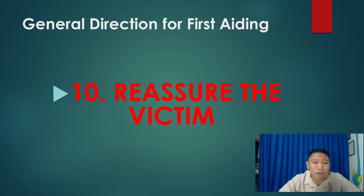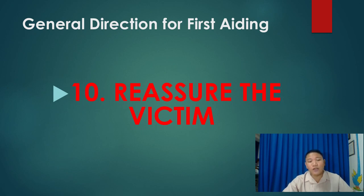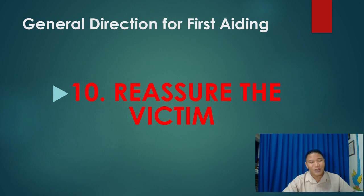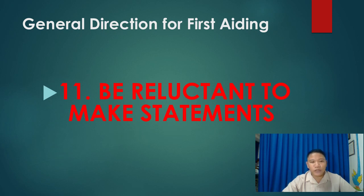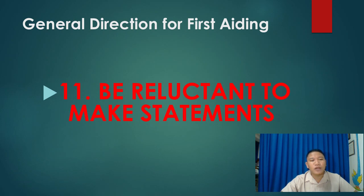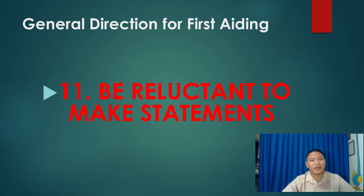Reassure the victim, but do not give false reassurances. Do not tell them everything is fine when it clearly is not — for example, if their limb has been amputated or they are severely bleeding. Be truthful but in a calm and gentle manner. Be reluctant to make diagnostic statements — do not tell the patient they are diabetic or diagnose their condition. You are not the doctor; you are just the first aider, there to give first aid and help them.